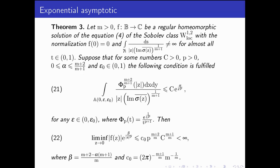Consider the exponential asymptotic of solutions. Let f from B to the complex plane C be a regular homeomorphic solution of the Sobolev class W¹·²_loc log with normalization f(0) = 0 and the integral does not equal infinity for almost all t from (0, 1). Suppose that for some numbers c > 0, p > 0, α, and ε₀ ∈ (0, 1), condition (21) is fulfilled for any ε ∈ (0, ε₀). Then the asymptotic estimate (22) is fulfilled.